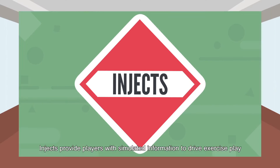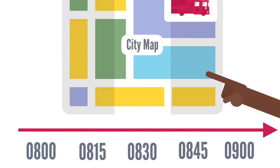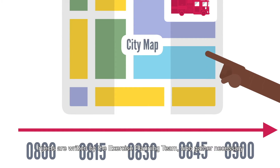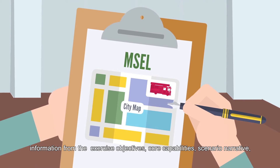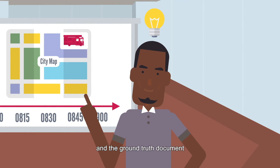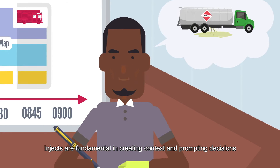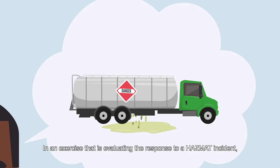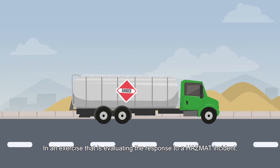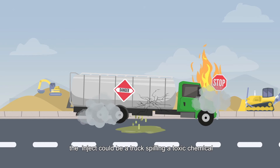Injects provide players with simulated information to drive exercise play. Injects are written by the exercise planning team, who gather necessary information from the exercise objectives, core capabilities, scenario narrative, and the ground truth document. Injects are fundamental in creating context and prompting decisions by all players. In an exercise evaluating the response to a hazmat incident, the inject could be a truck spilling a toxic chemical.